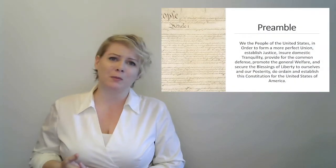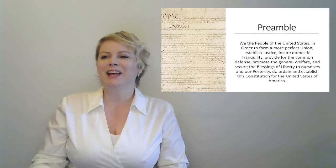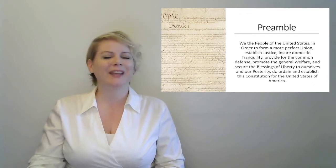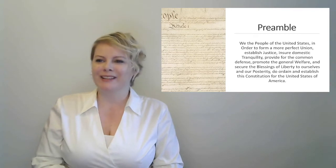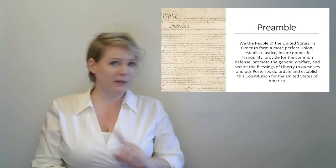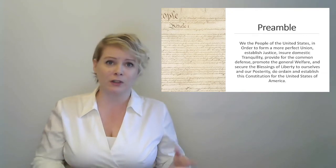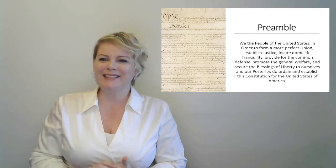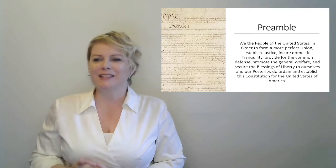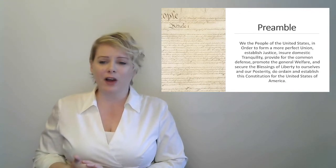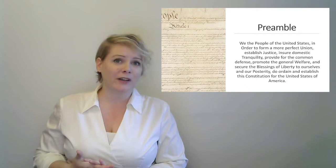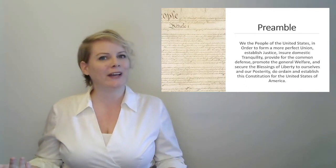The Constitution starts with the Preamble, which is very beautiful. 'We the People of the United States' — bear in mind that part is very important. It is not 'me, James Madison' or 'us the Constitutional Convention.' It's meant to be inclusive. 'We the People of the United States, in order to form a more perfect union, establish justice, ensure domestic tranquility, provide for the common defense, promote the general welfare, and secure the blessings of liberty to ourselves and our posterity, do ordain and establish this Constitution for the United States of America.'